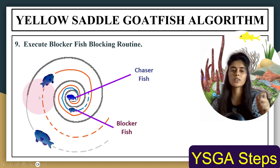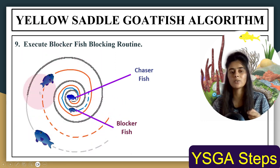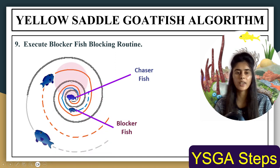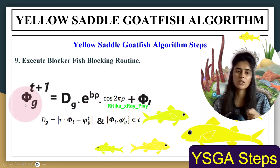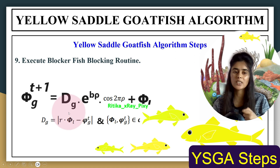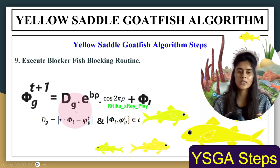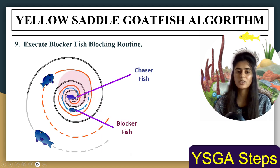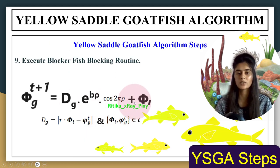Next, we execute the blocker fish blocking routine. The blocker fishes' role is to block the escape of prey when they try to hide in cracks or coral. Blocker fishes surround the chaser fish in a spiral path, with each blocker fish following its own spiral path updated each iteration. The new position for each blocker fish is calculated using an equation that includes dg — the distance between the chaser fish and the blocker fish — and a logarithmic spiral is applied to model this movement.